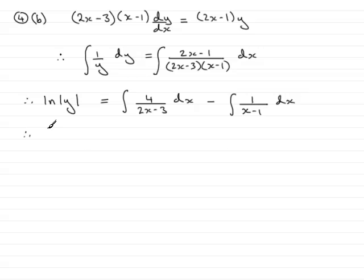Moving on then, we have natural log of y equals. Now, integrating this, whenever I get a fraction, just check always to see whether the bottom differentiates to give essentially the top. If you differentiate the bottom, you get 2, and that's just 2 times the top here. So that will be 2 times the natural log of 2x minus 3.